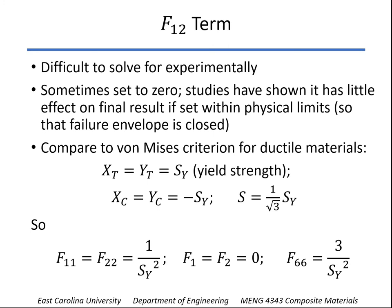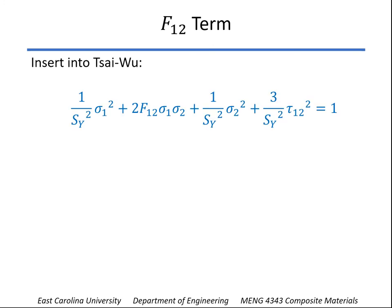So you can plug those—well, first of all, those will give you these values for F1-1, F2-2, and F6-6. And because of the fact we have equal strengths in tension and compression for ductile material, then the linear terms F1 and F2 both go to zero. So plugging those into the Tsai-Wu criterion and rearranging that a little bit by multiplying through by the yield strength squared, here's what we end up with.